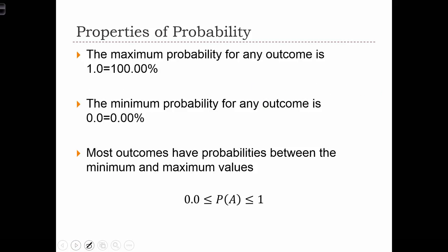The maximum probability for any outcome is always 100%. The minimum probability for any outcome is always zero. In other words, you can never expect to see an outcome with more than a hundred percent probability or less than a zero percent chance. And most outcomes, then, have probabilities in the range between zero and one.